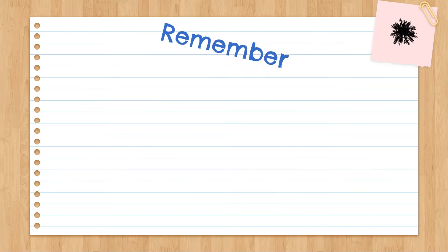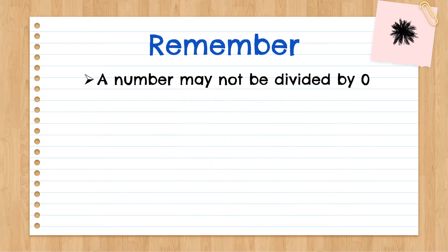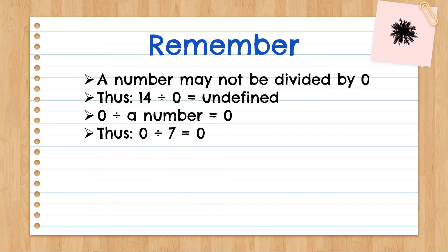We carry on with the important information, so remember the following as well. A number may not be divided by zero. Thus, fourteen divided by zero is undefined. Whereas, zero divided by a number is zero. Thus, zero divided by seven is zero.